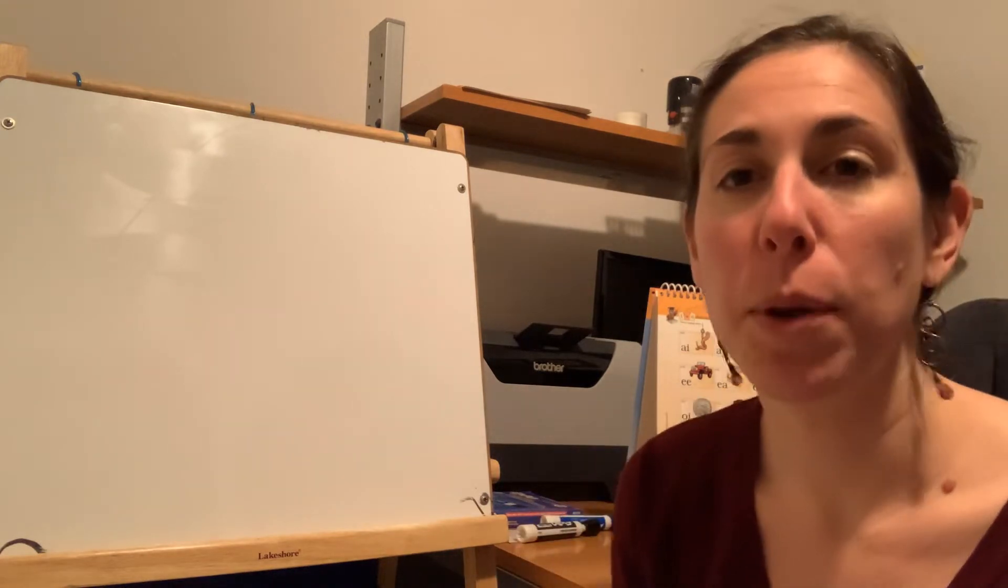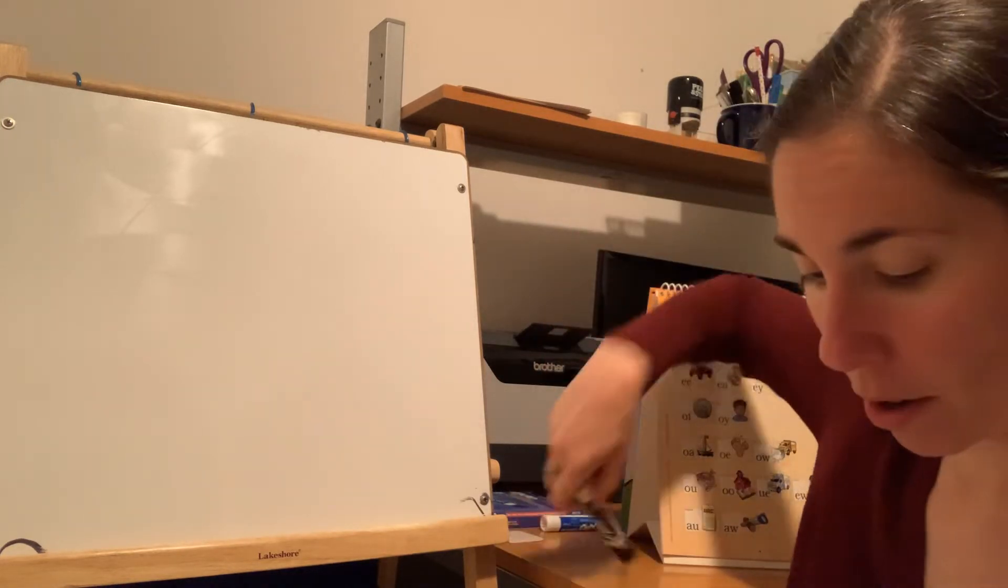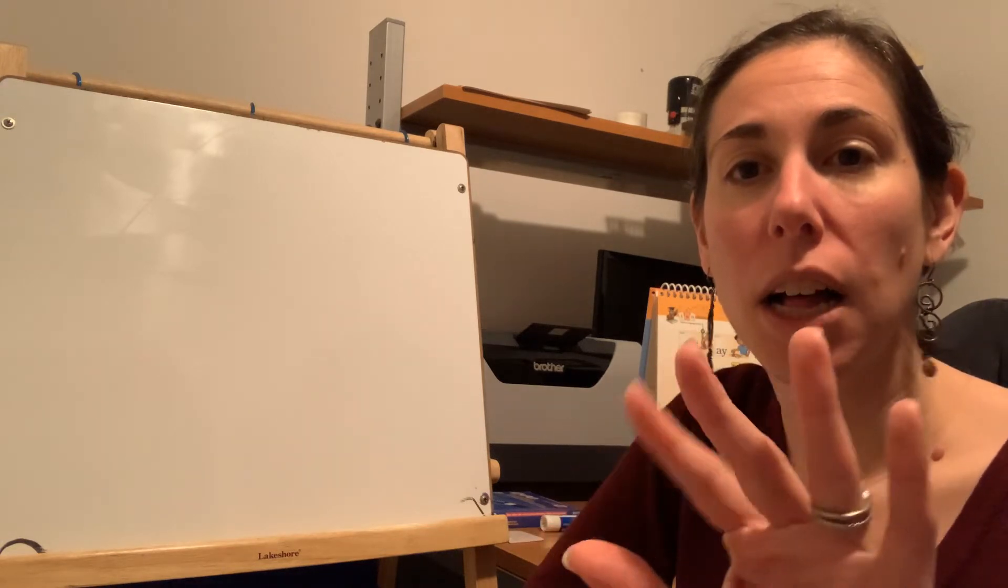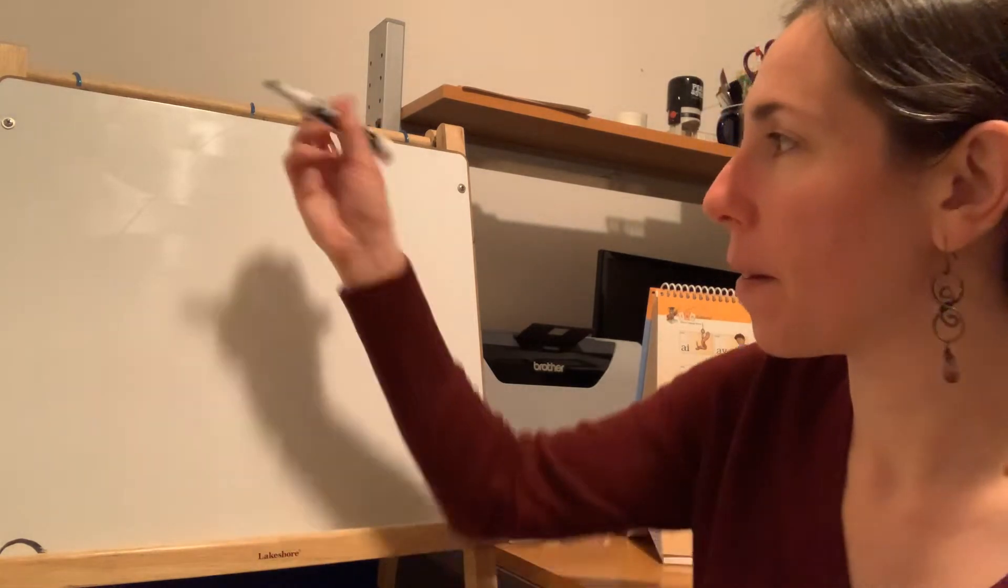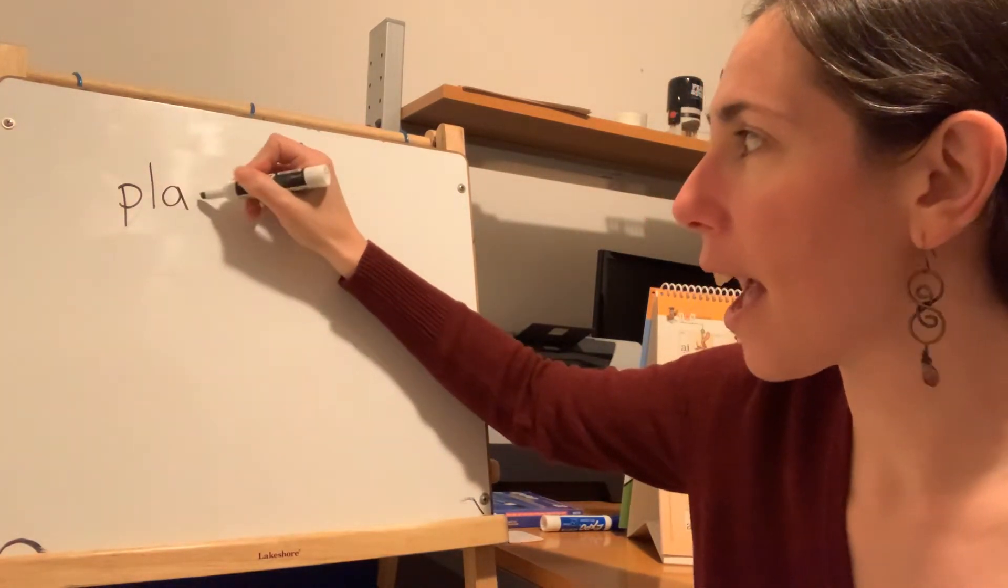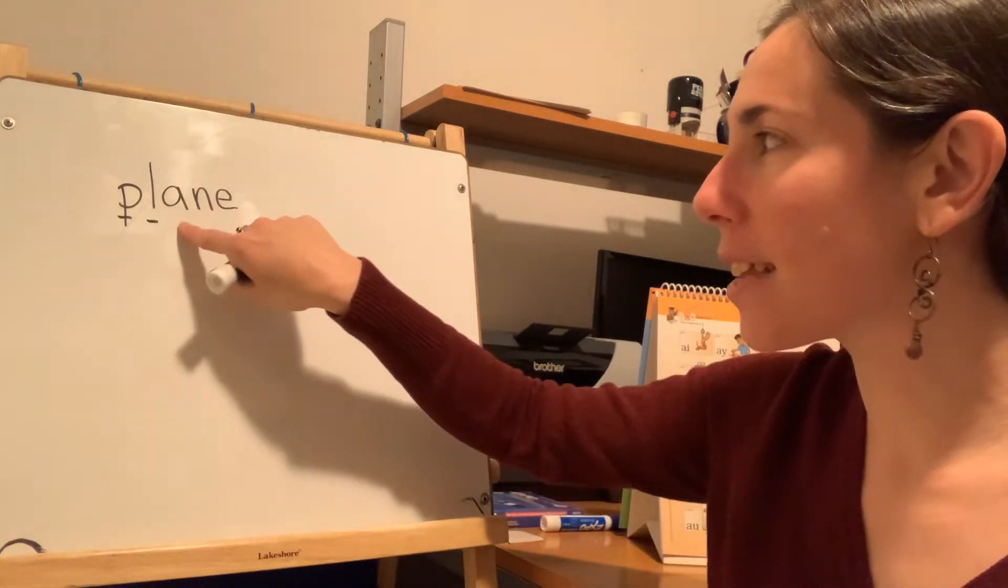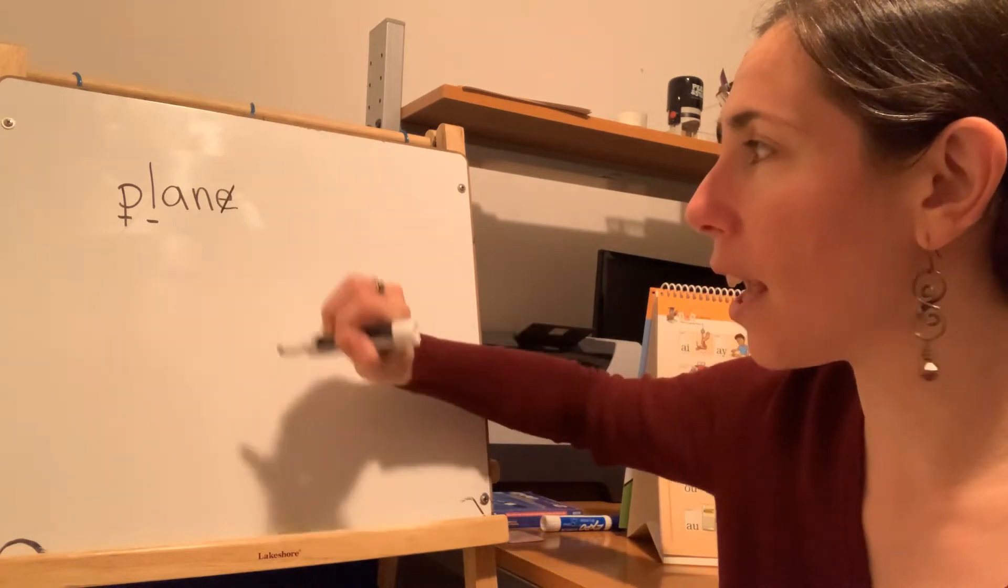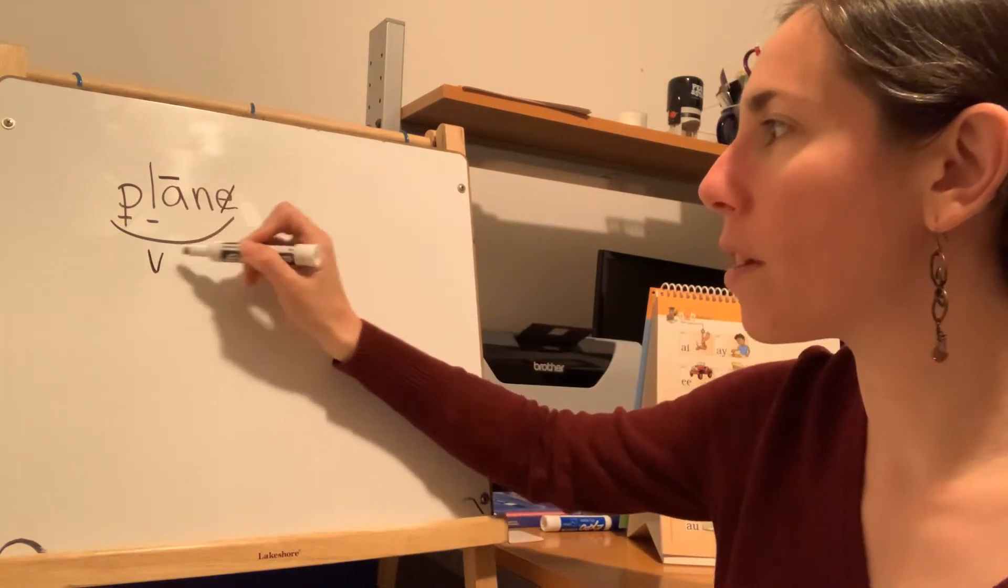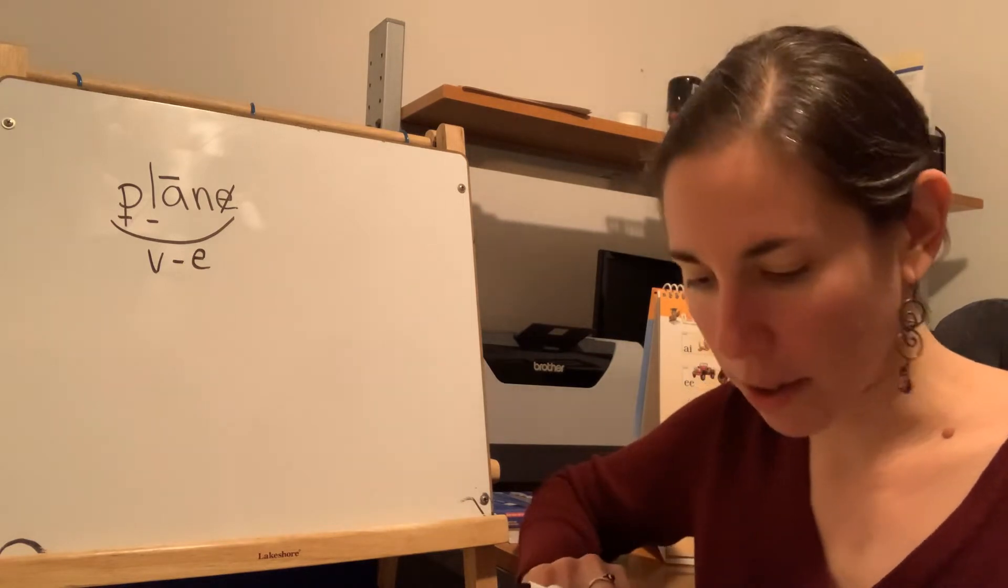All righty. So we have been working with long vowel sounds. We are going to do some more long vowel words today. I would like you to repeat after me. Say plain. Tap plain. P-L-ain. Plain. We have a blend at the beginning, P-L, and a long A. Let's take a look at that word. We have a blend at the front, P-L. A is saying its name, E is helping it. We're going to cross out that E, underline plain. This gets a macron over the top, and it is a vowel-consonant-E syllable type. That's how we mark our long vowel words.